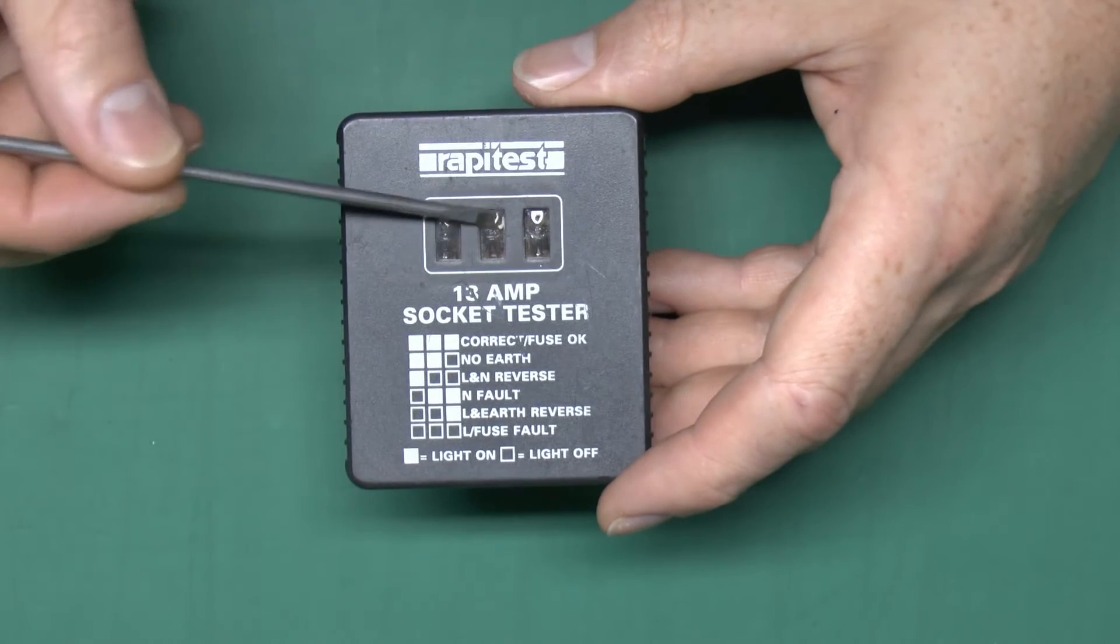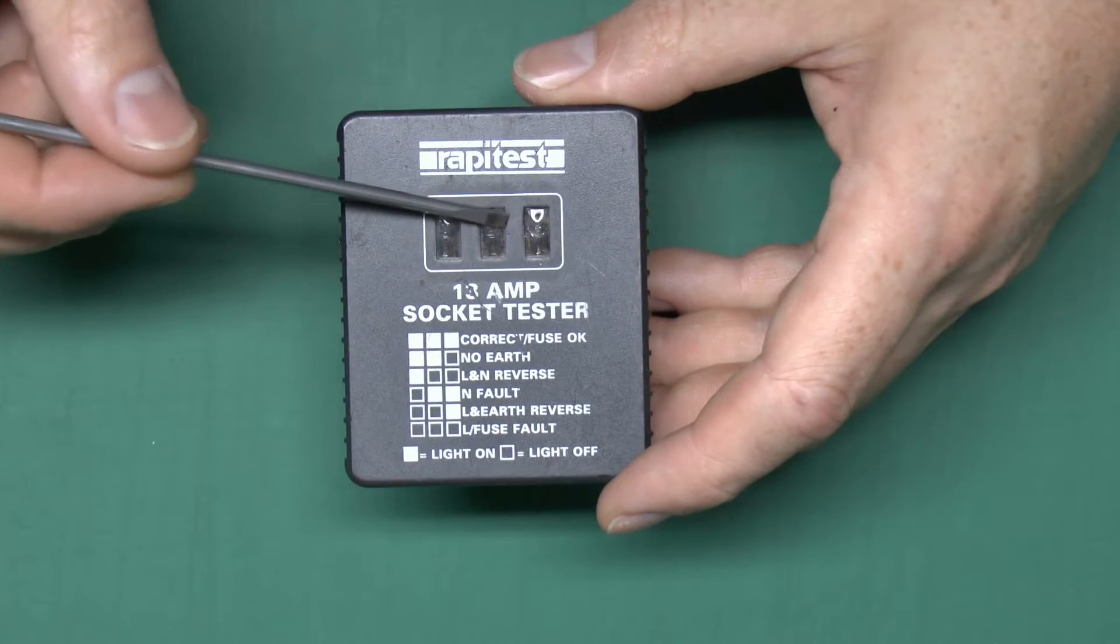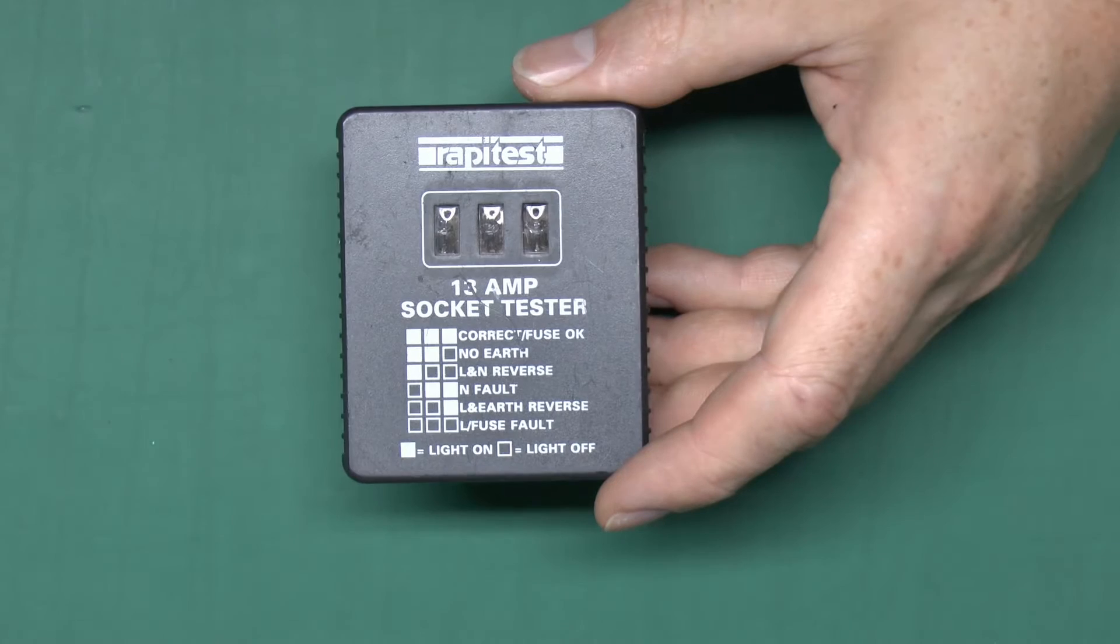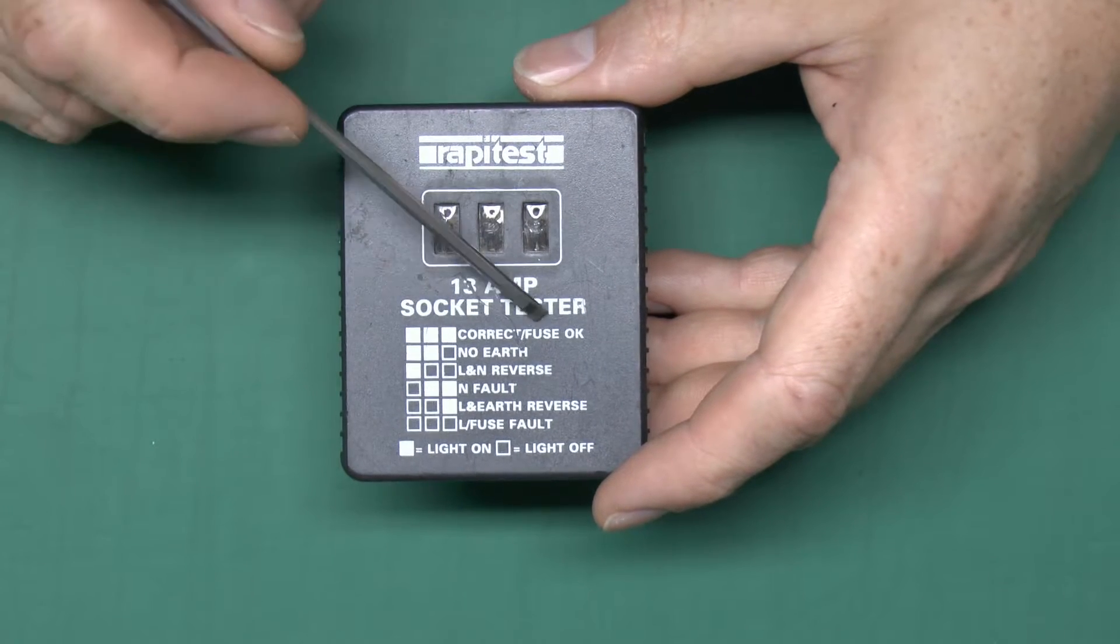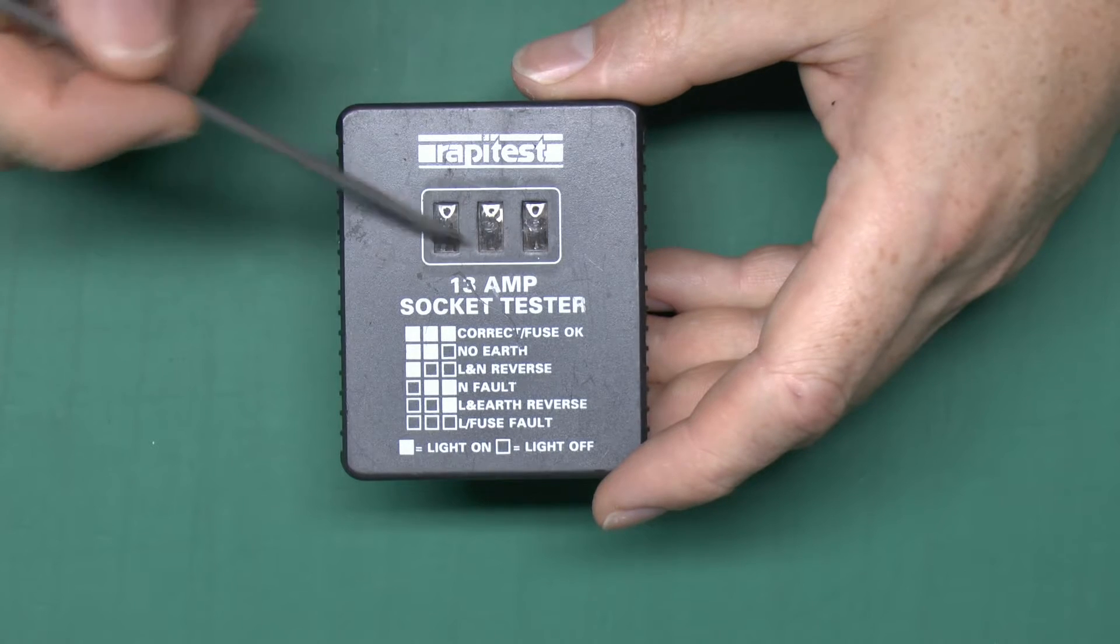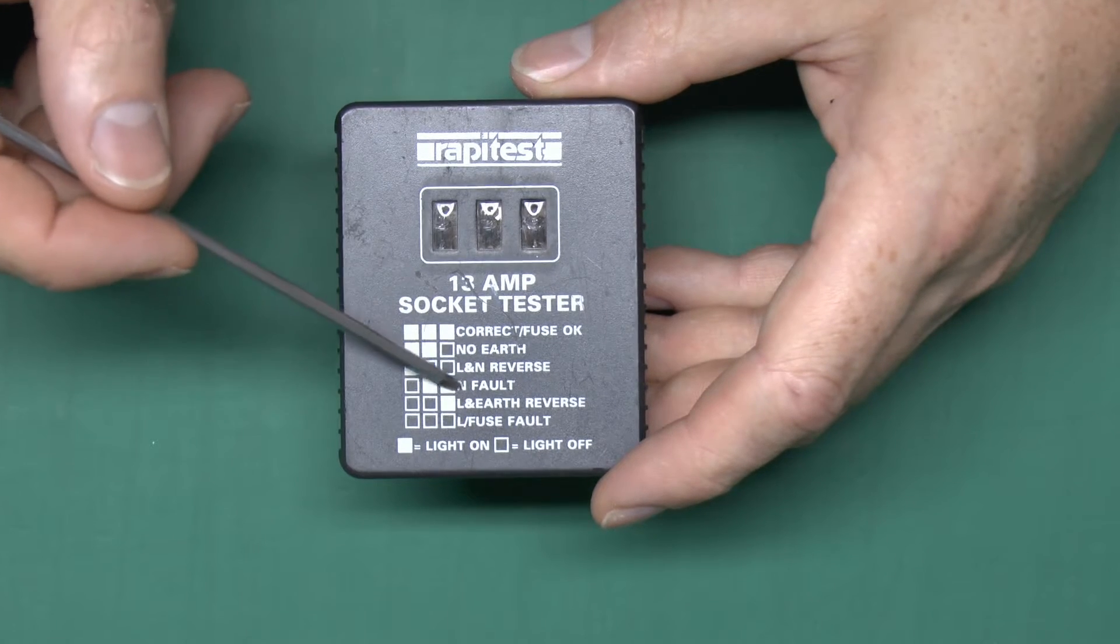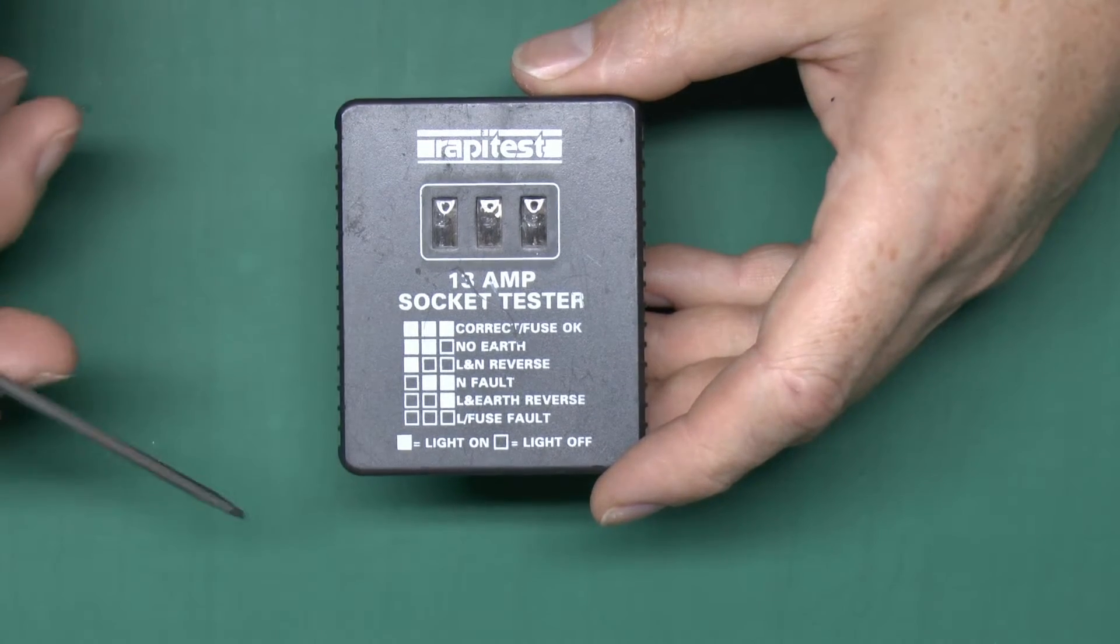On the front there we've just got three actually neon indicators here which will light up orange and the idea is that when you plug this in all three should light up as it says here, that's correct. And then if you only get two or one illuminated there's various combinations here for various different types of fault.